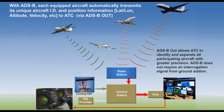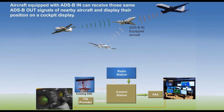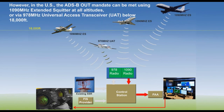ADS-B does not require an interrogation signal from the ground like the old system. Aircraft equipped with ADS-B in can receive those ADS-B out signals from other aircraft. However, in the U.S. because of the dual frequency band — 1090 megahertz used at all altitudes, and 978 megahertz used below 18,000 feet — you have an illustration where aircraft at different altitudes may be using different frequencies.